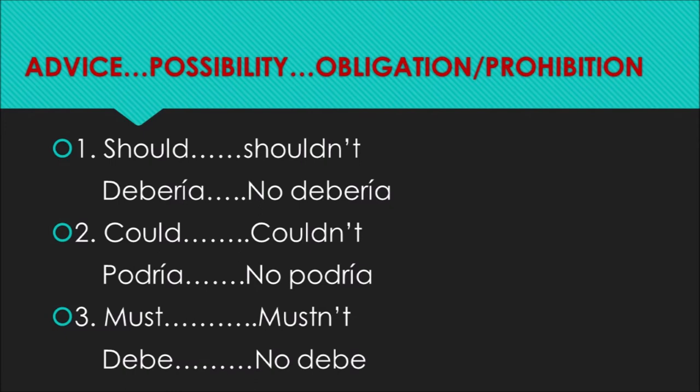Next activity: advice, possibility, obligation or prohibition. Consejo, posibilidad, obligación o prohibición. Estos son los verbos modales que se mencionaban en el objetivo. Should / shouldn't — debería / no debería.